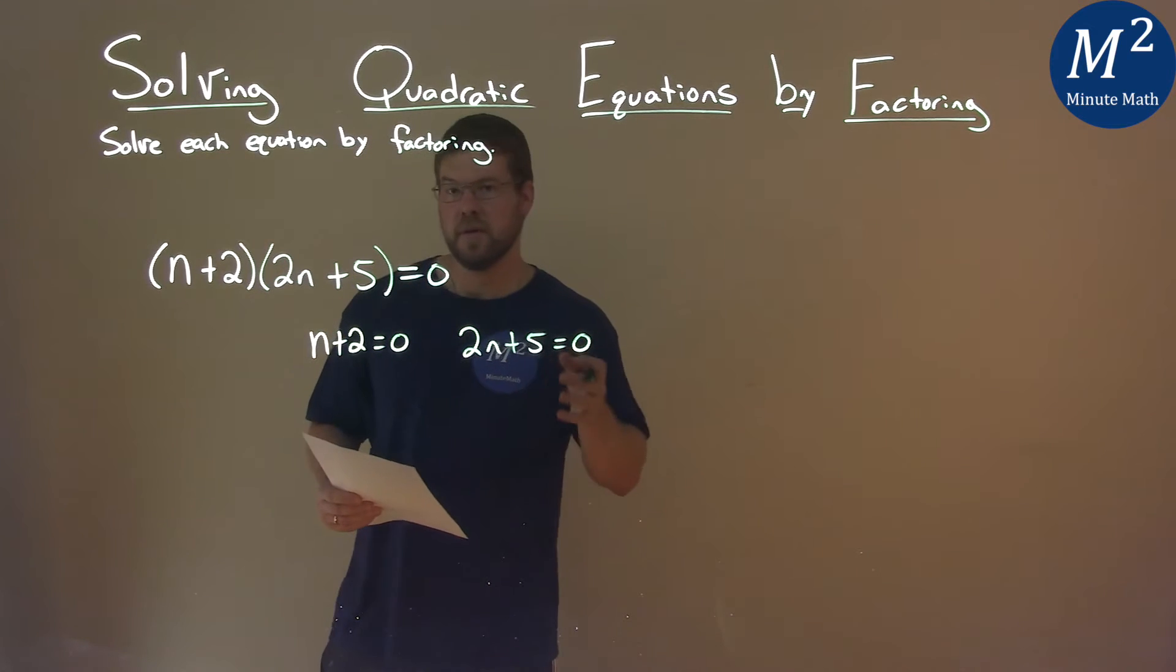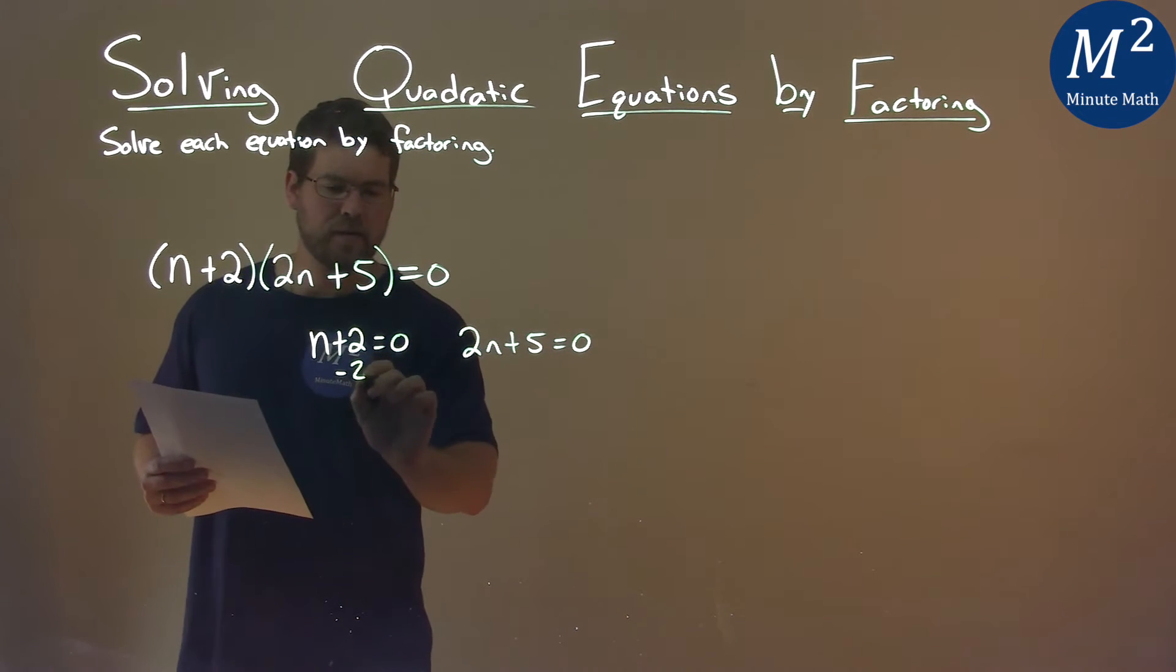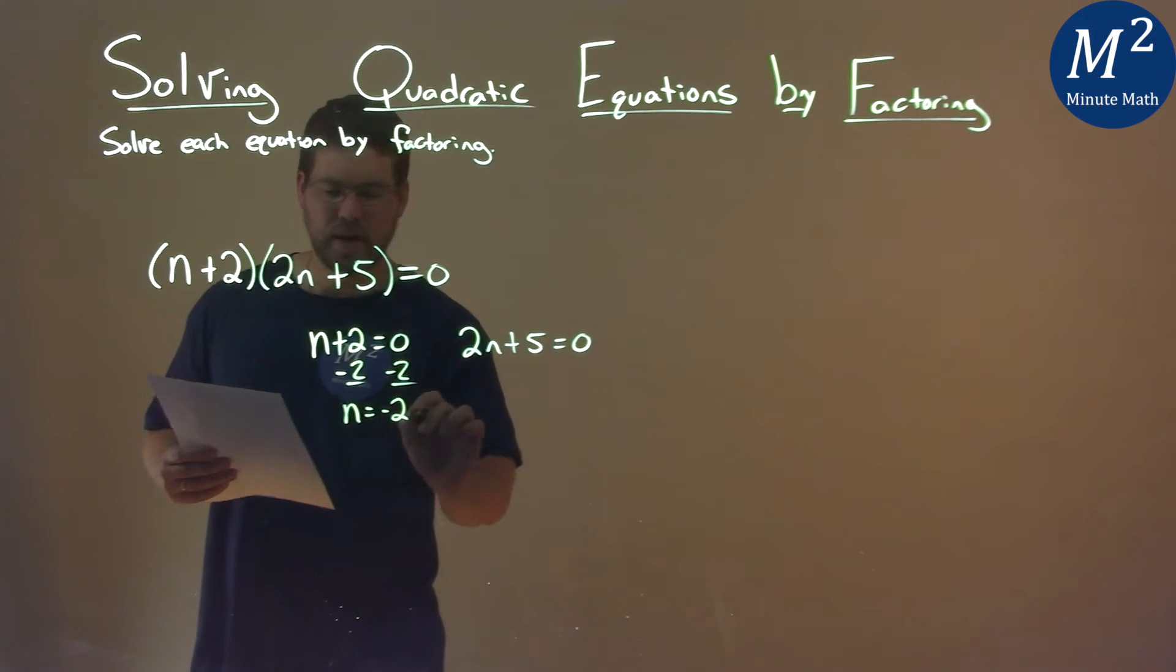Now I solve each one of these individually. I subtract 2 from both sides, and n equals negative 2.